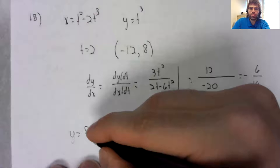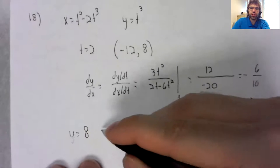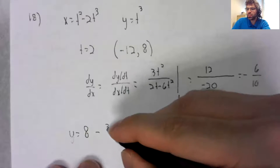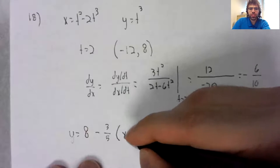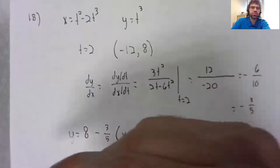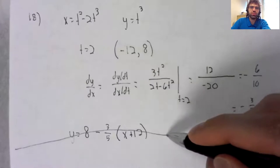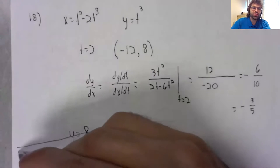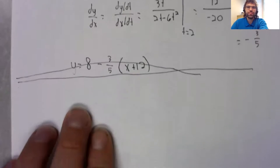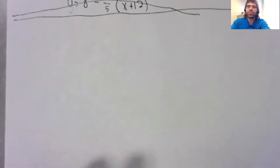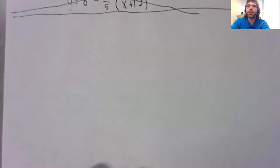And y equals eight minus three fifths times x plus, oops, x plus 12. I didn't mean to cross that out, but problem 19 risks being kind of tedious.